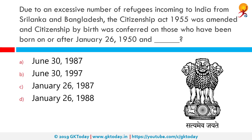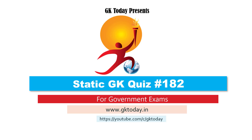Due to an excessive number of refugees incoming to India from Sri Lanka and Bangladesh, the Citizenship Act 1955 was amended and citizenship by birth was conferred on those born on or after January 26, 1950 and before June 30, 1987. Indian nationality law largely follows jus sanguinis, or citizenship by right of blood, as opposed to jus soli, which is citizenship by right of birth within the territory.